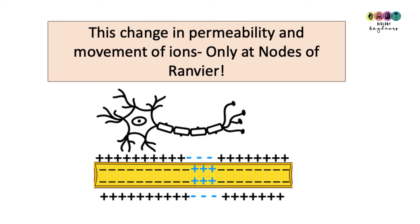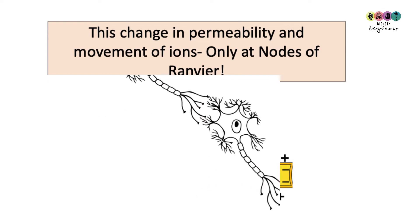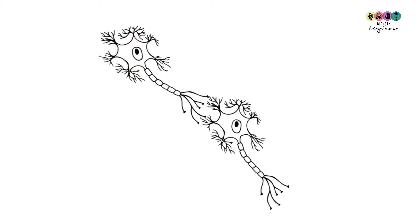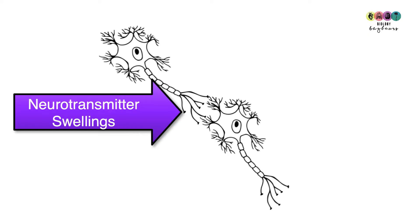Sensory neurons and motor neurons have a myelin sheath with gaps or spaces known as the nodes of Ranvier. It's only at these nodes where the permeability has to change, not the whole way along. So in these neurons where there is a myelin sheath, the nodes of Ranvier is the only place where the permeability changes, and this speeds up the transmission of the impulse. Eventually the impulse reaches the very ends of the neuron where there are swellings known as the neurotransmitter swellings to facilitate the impulse being passed on to the next neuron.